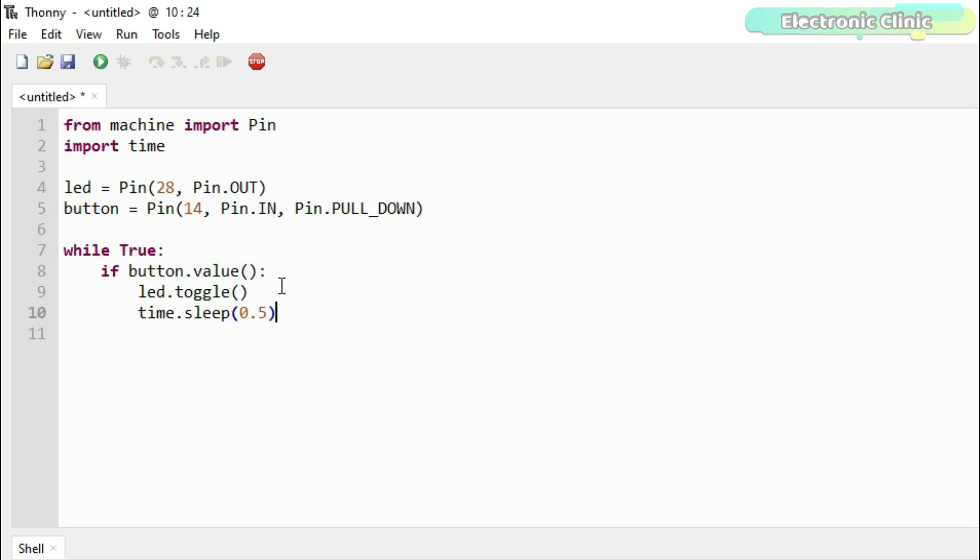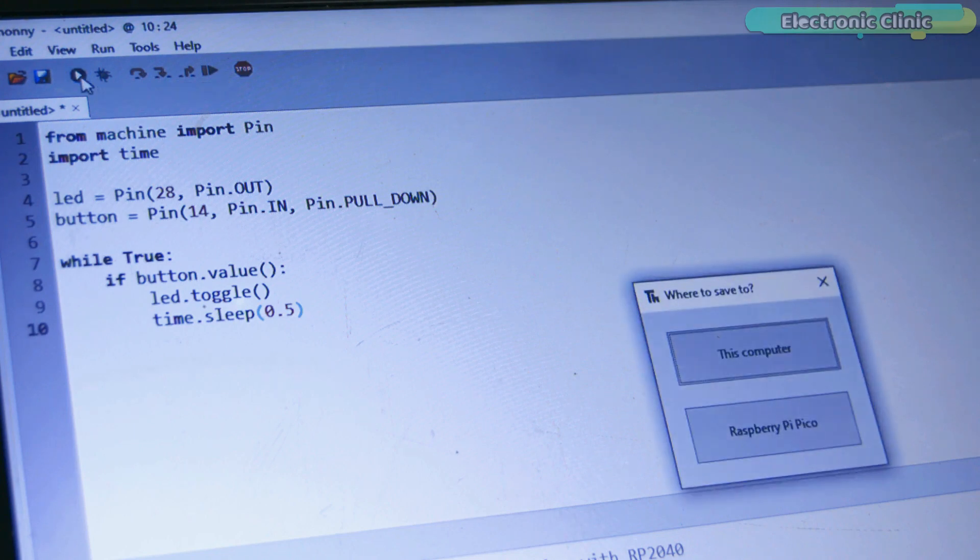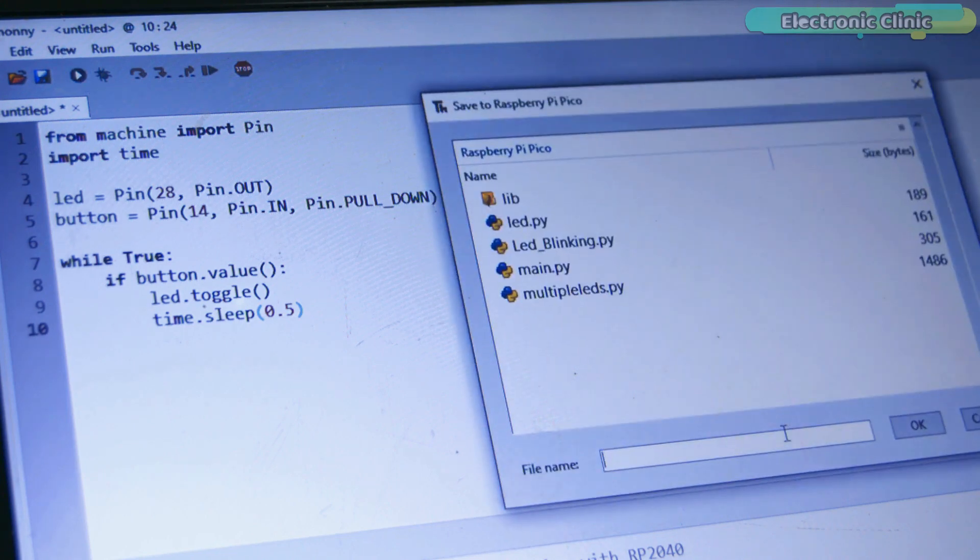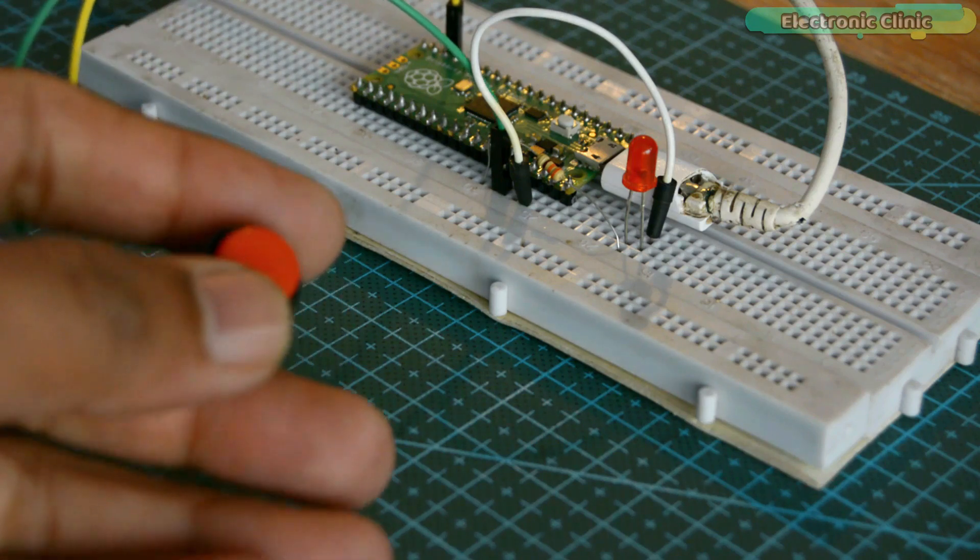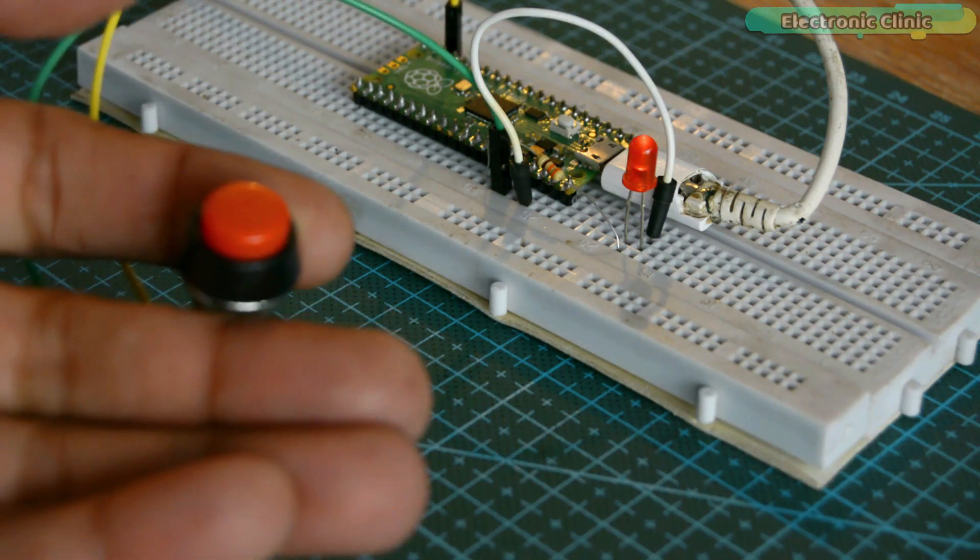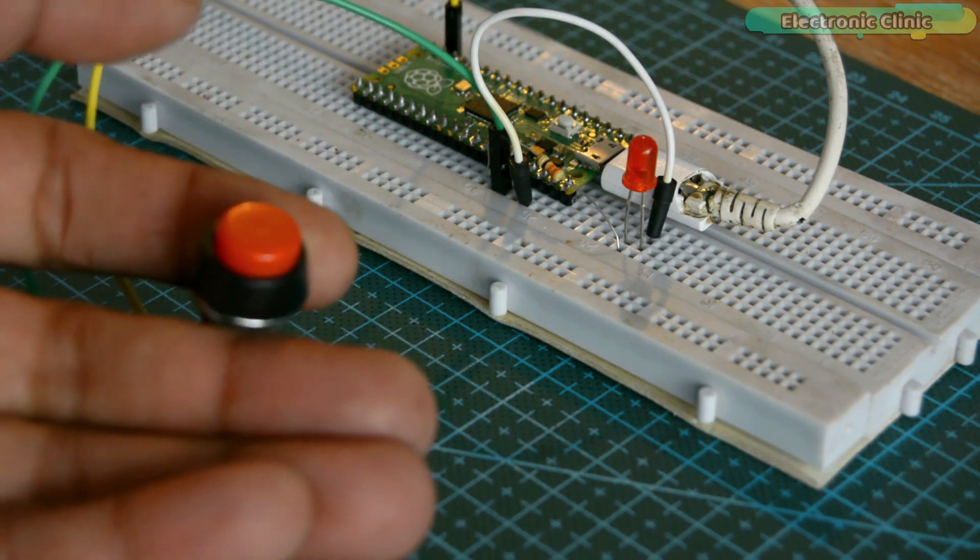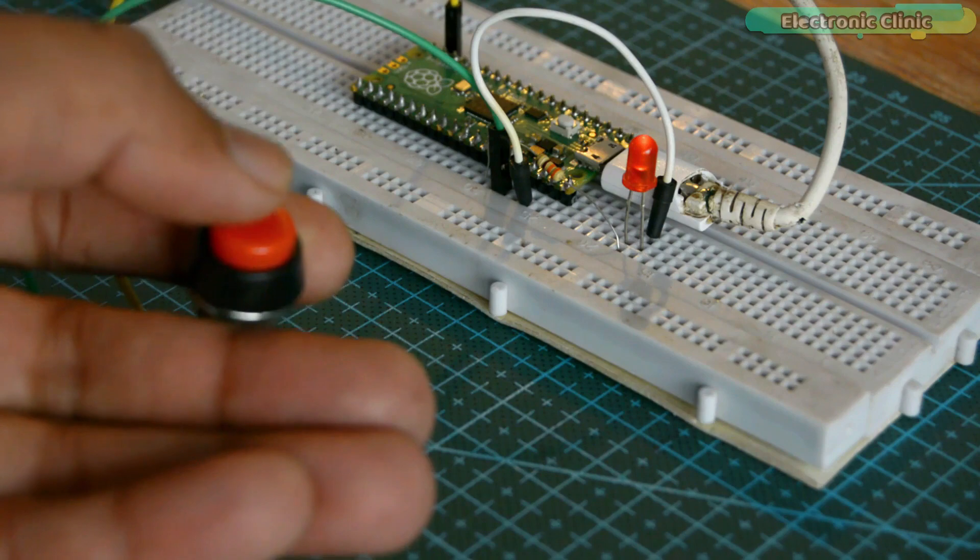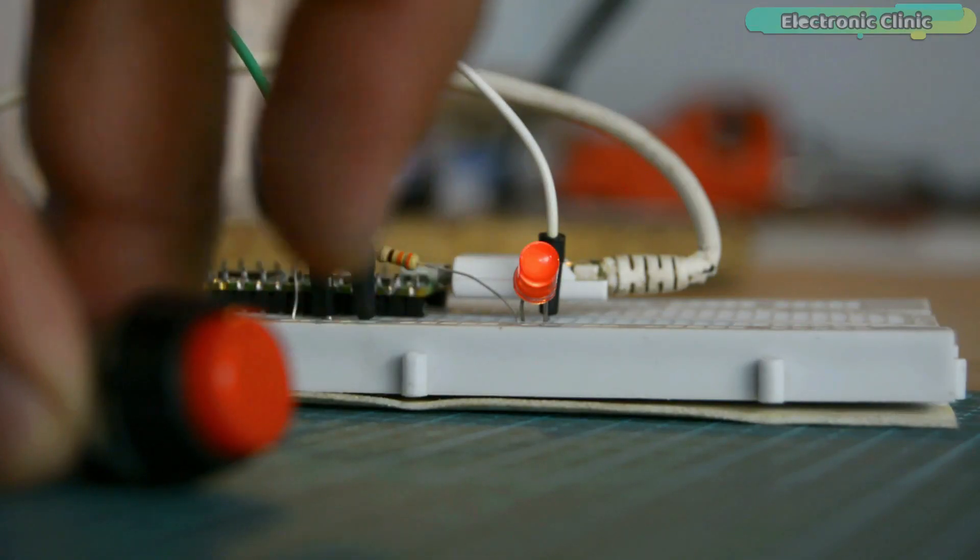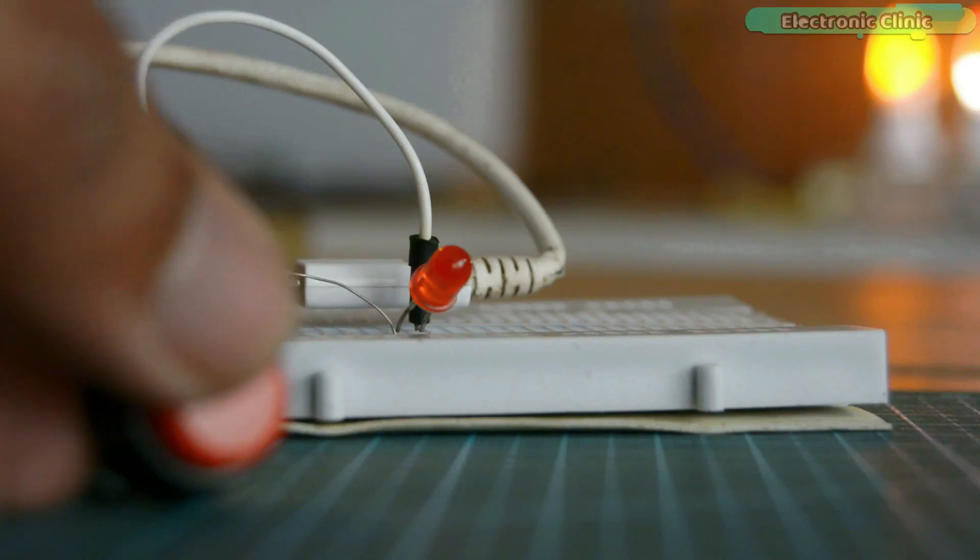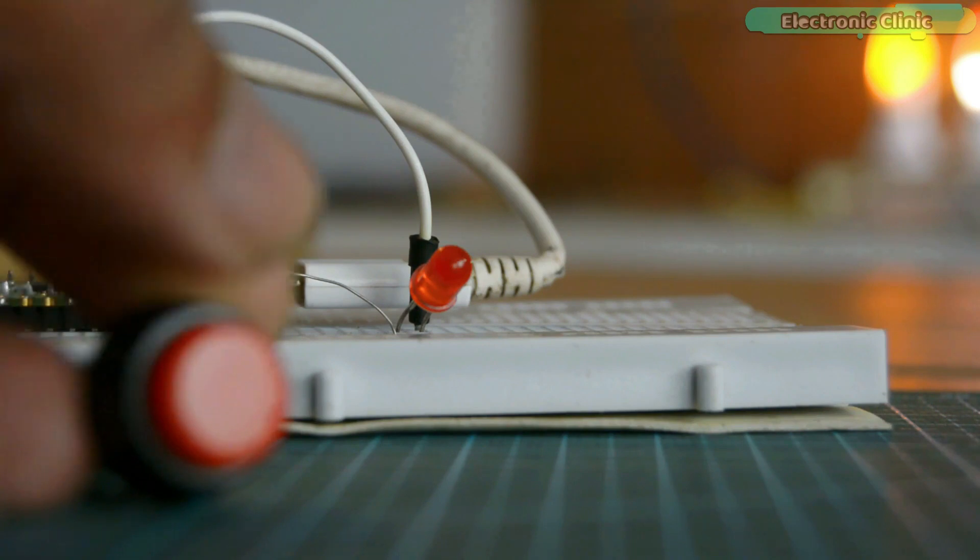Now let's go ahead and run this code. You can see each time I press the button, LED changes its state.